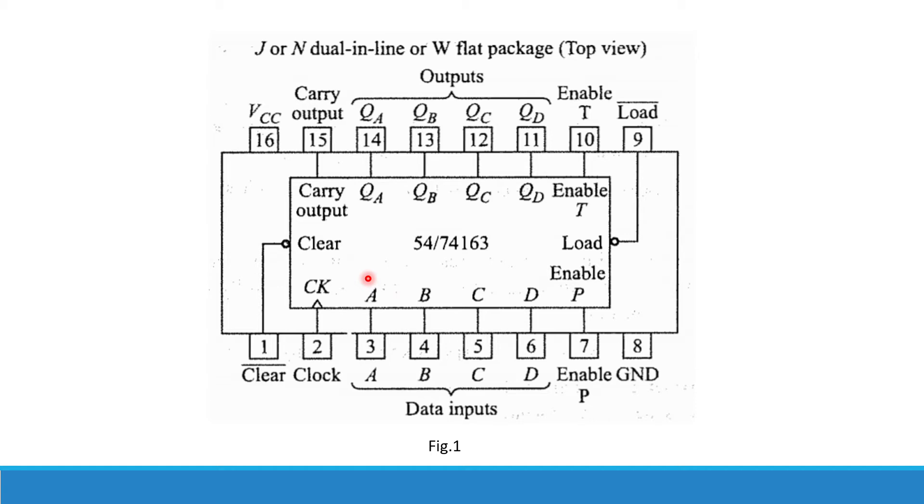When a low level is applied to the load input, the counter is disabled and the very next positive clock transition will set the flip-flops to agree with the levels present on the four data inputs, that is A, B, C, D.